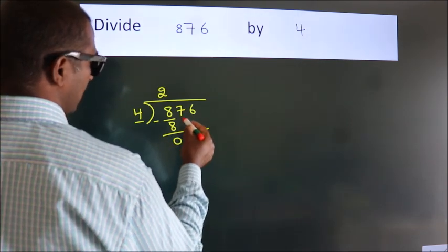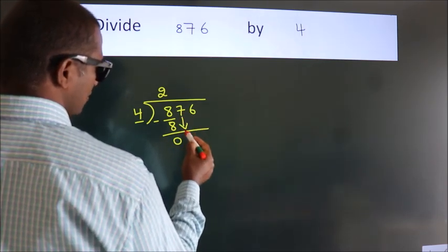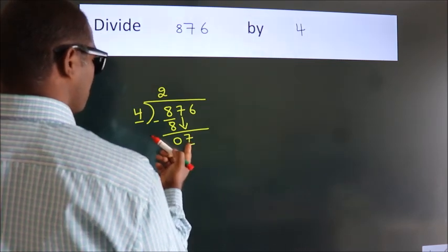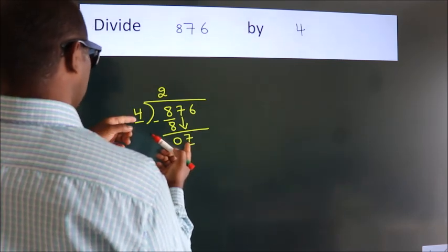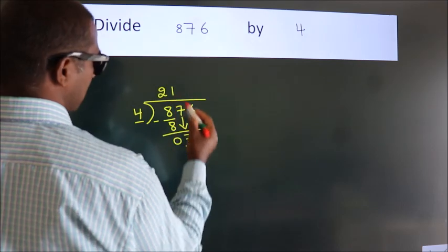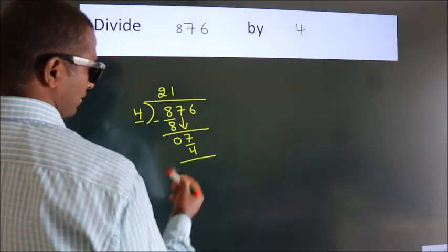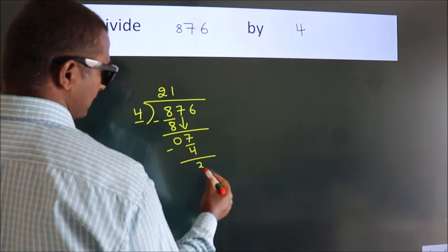After this, bring down the beside number. So, 7 down. A number close to 7 in the 4 table is 4 times 1, which is 4. Now, we subtract. We get 3.